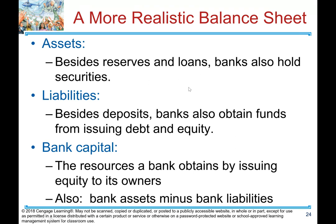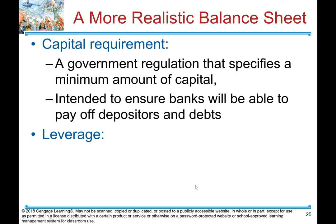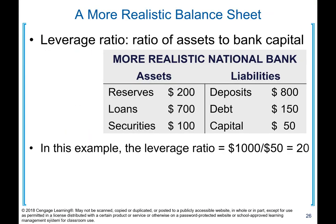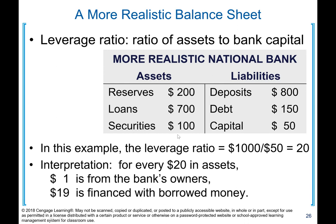More realistic balance sheet. Besides reserves and loans, banks also hold securities on the asset side. Besides deposits, banks also obtain funds from issuing debt and equity on the liability side. Bank capital is the resources a bank obtains by issuing equity to its owners; it equals bank assets minus bank liabilities. Capital requirement is a government regulation that specifies the minimum amount of capital, intended to ensure banks will be able to pay off depositors and debts. Leverage is the use of borrowed funds to supplement existing funds for investment purposes. The leverage ratio is the ratio of assets to bank capital.